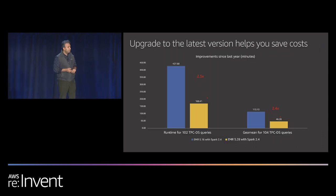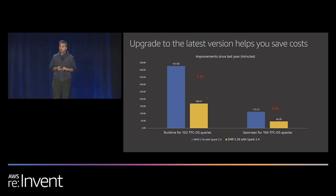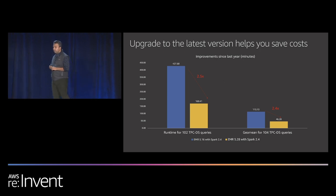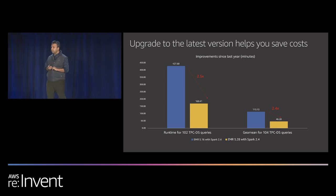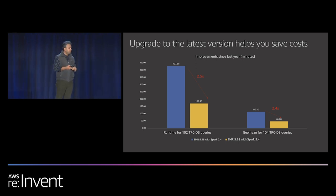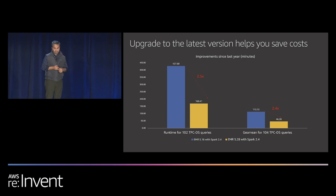Looking at a couple of other scenarios: the total runtime of TPC-DS queries has reduced by 2.5x from the previous open-source version without the runtime. And when I look at the geo mean, it has also improved significantly.